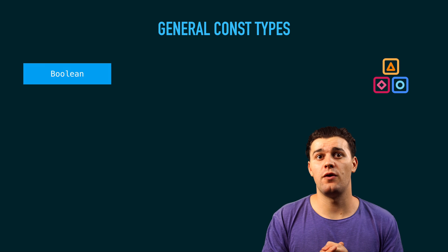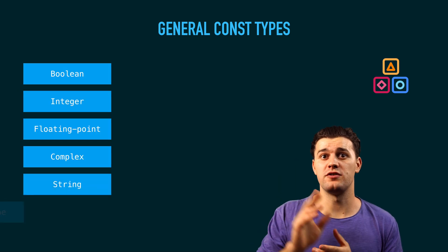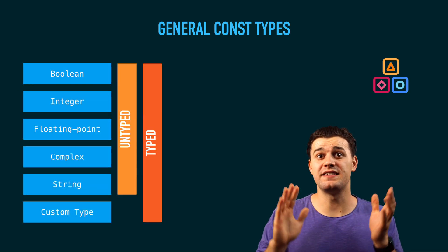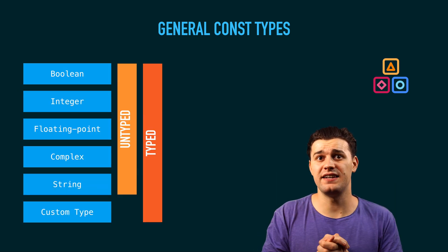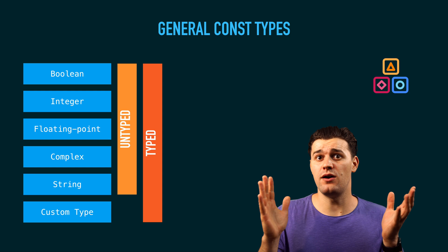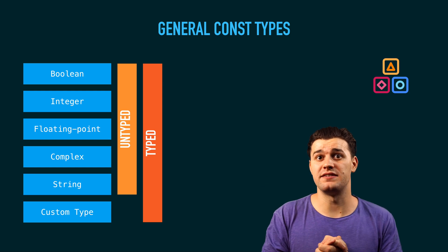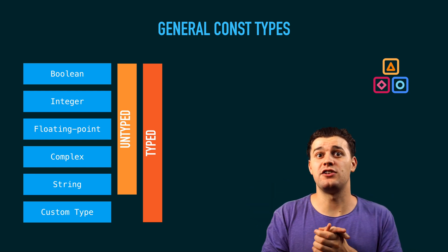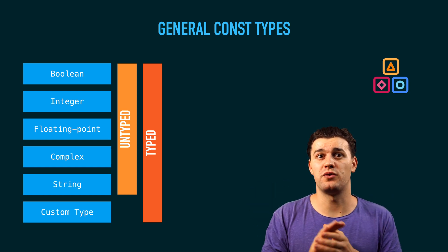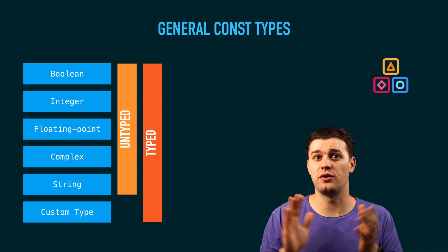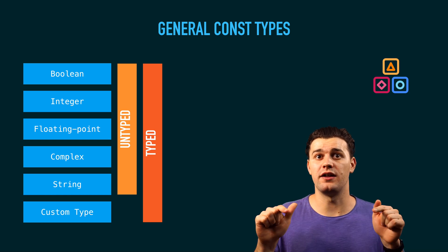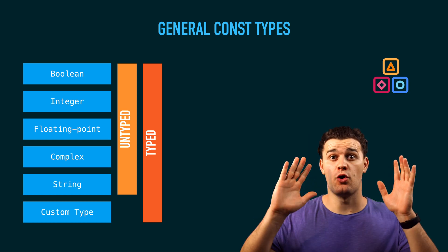When we speak about constants in Go there are two types: typed and untyped. It's as simple as it sounds — typed means they have a type, untyped means they don't have a type. We're going to have a closer look at typed and untyped later in this tutorial.